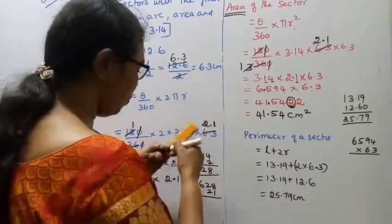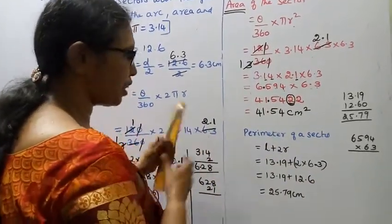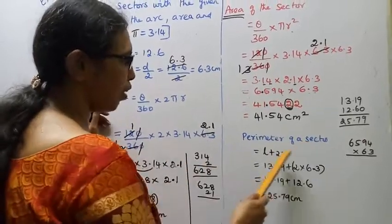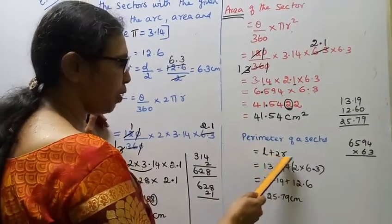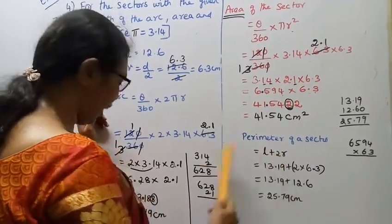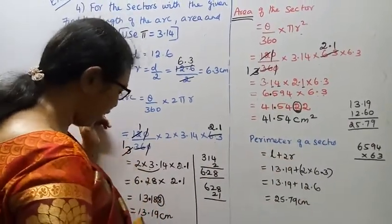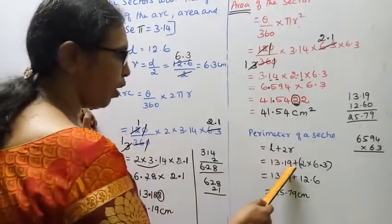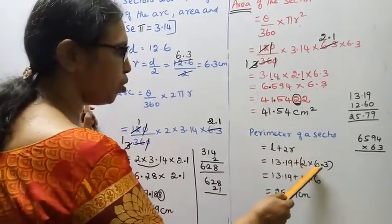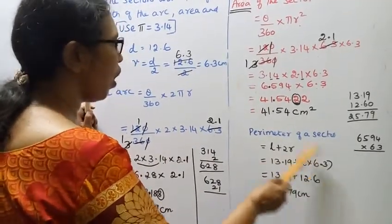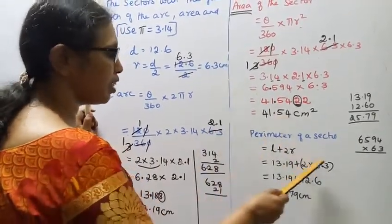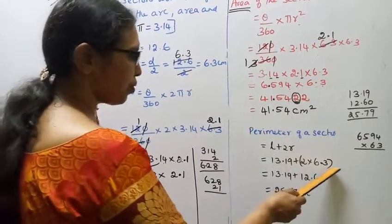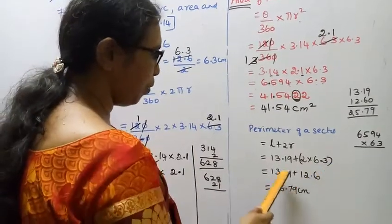Now for the perimeter of the sector. The formula is perimeter equals L plus 2R, where L is the length of the arc. Substituting: L is 13.19, plus 2 into R, where R is 6.3.